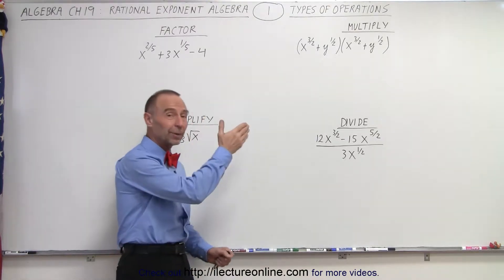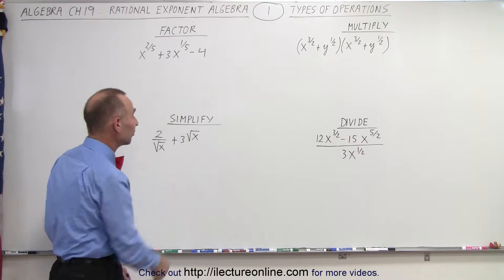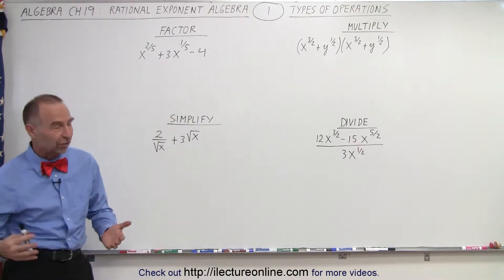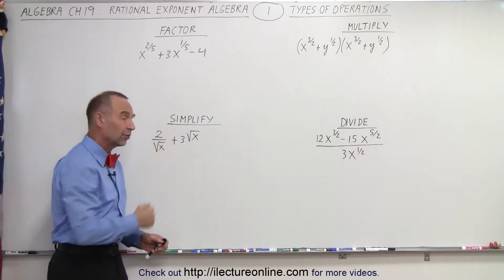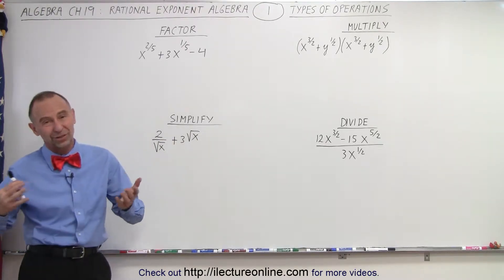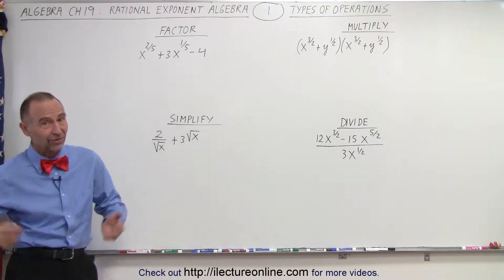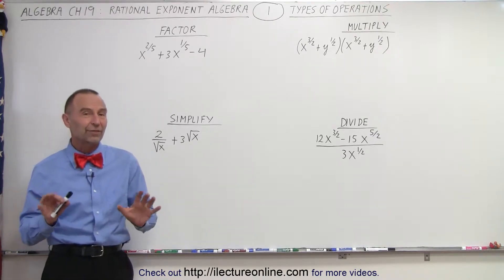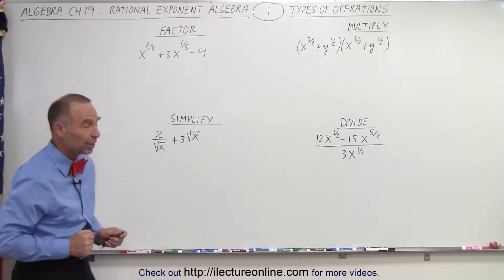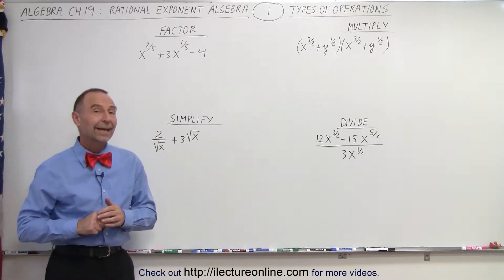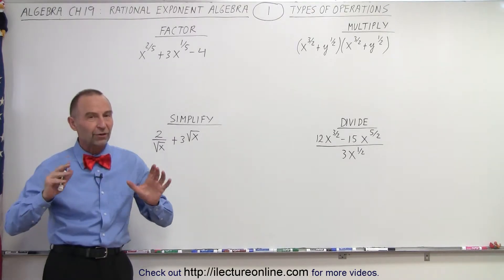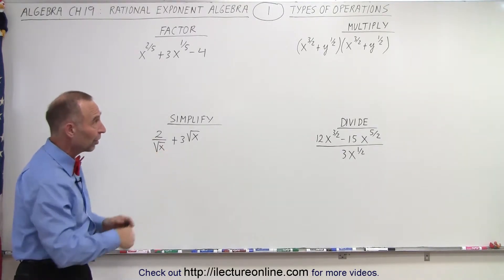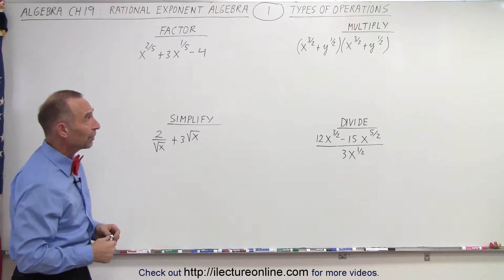For example, we need to know how to multiply, divide, factor, and simplify expressions that contain rational exponents or radicals, which in essence is the same as rational exponents. So here we have a variety of the four different kinds of operations we want to become familiar with, and later on we'll show you some very specific techniques on how to deal with those. But let's first do an example of what these are like.